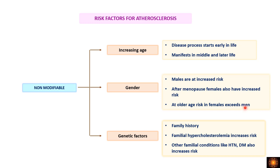At older ages, after menopause, females actually have more risk than men. Genetic factors also play a role — patients with a family history have increased risk. Additionally, conditions that are themselves risk factors for atherosclerosis, such as familial hypercholesterolemia, hypertension, and diabetes, run in families. These three — age, gender, and genetics — are the non-modifiable risk factors.